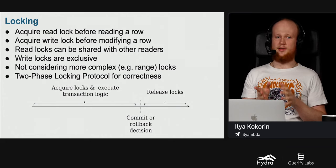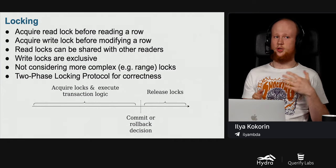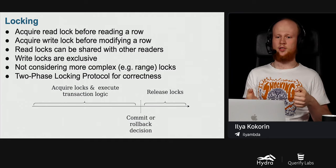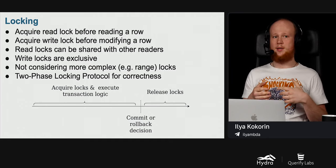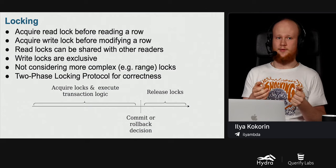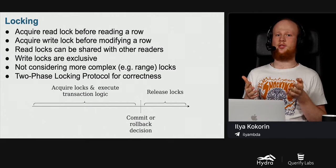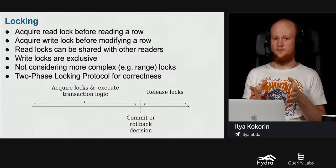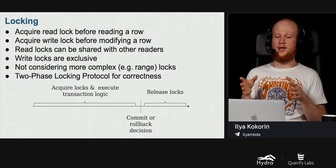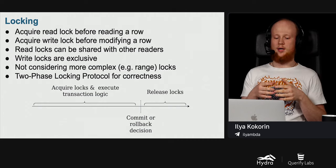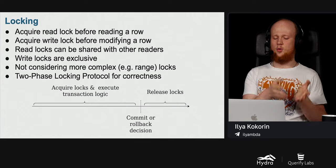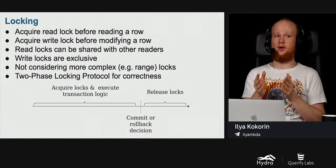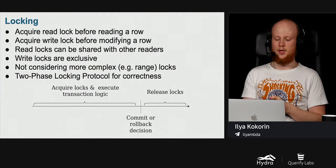According to two-phase locking, each transaction is divided into two phases. During the first phase, we may acquire locks and execute transaction logic — we may read rows, write rows, do computations — but we cannot release the locks we hold. Eventually we decide to commit or roll back, and that is when the second phase starts. During the second phase, we only release all the locks we have acquired — no new locks, no reads, no writes, no computations.